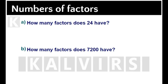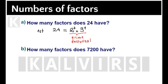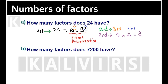In order to find the number of factors of any positive integer, do the following. First, take the number to its prime factorization. The prime factorization of 24 equals 2 to the power of 3 multiplied by 3 to the power of 1. The second step is to add 1 unit to each of the powers: 3 plus 1 and 1 plus 1. The third step is to multiply such values. Finally, 8 is the number of different factors that 24 has.